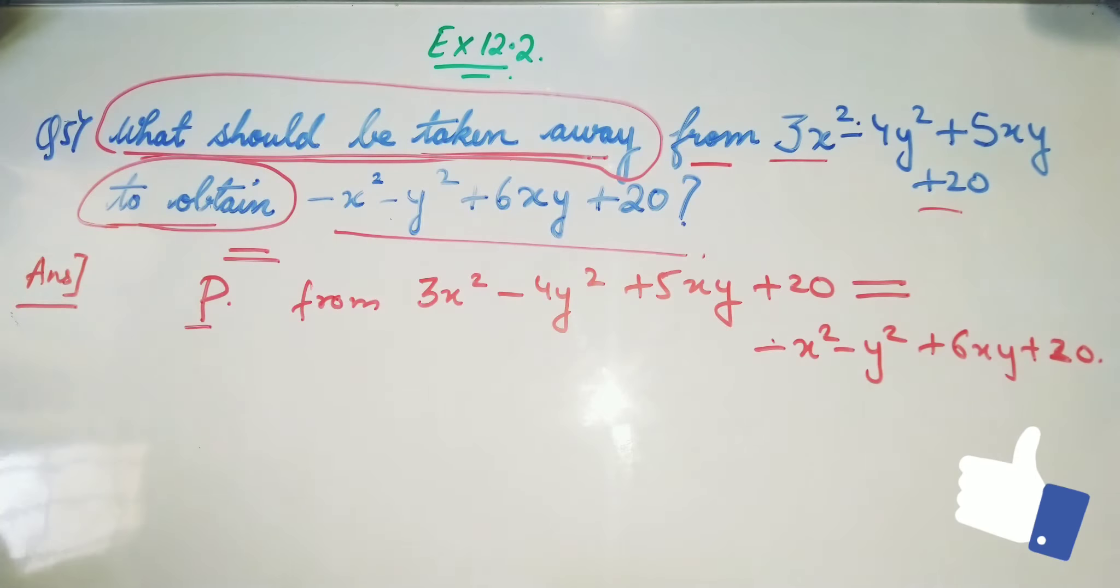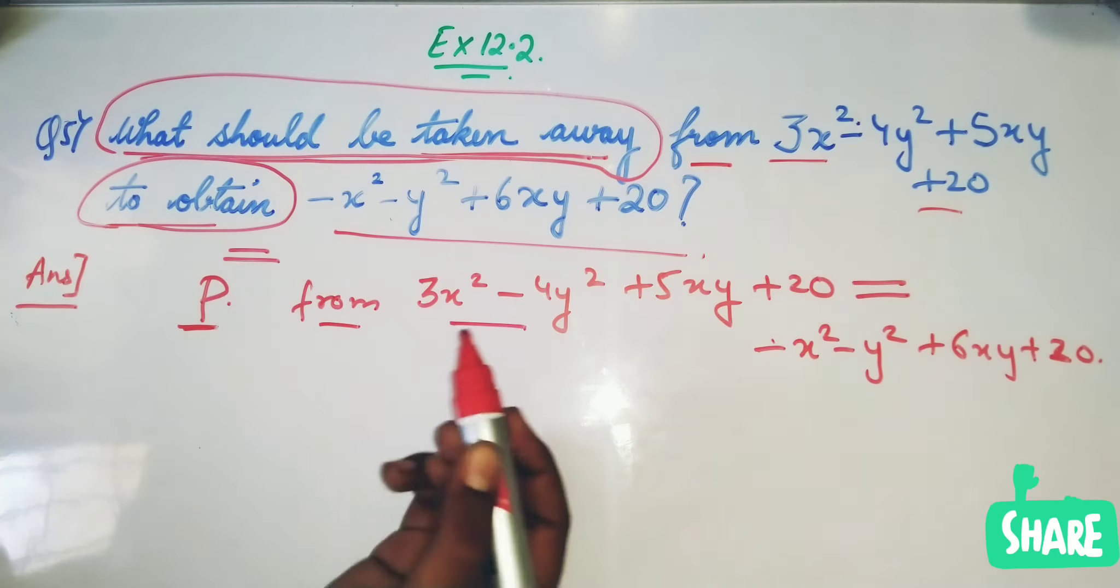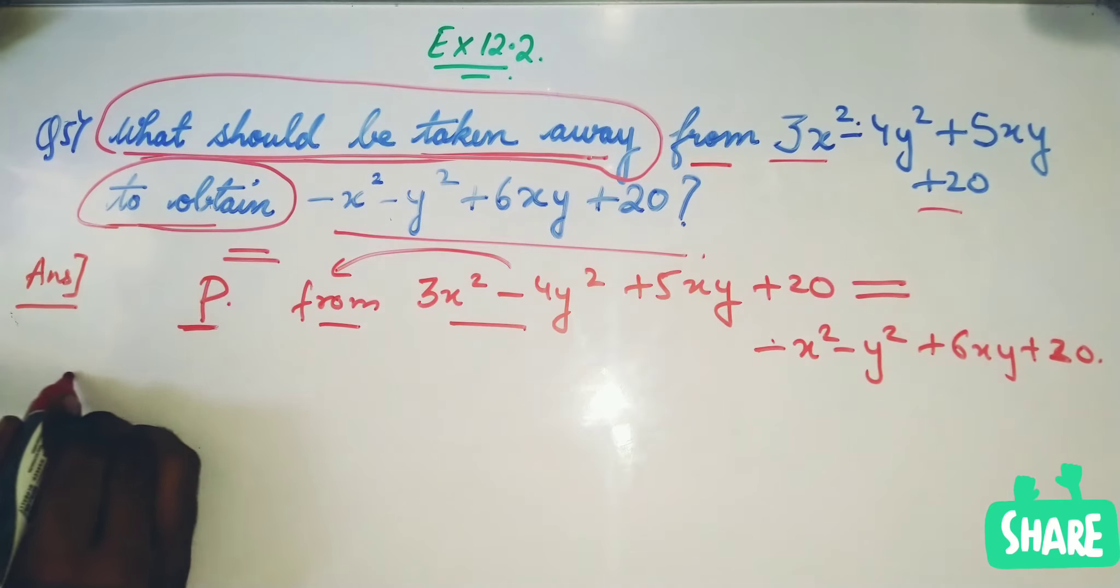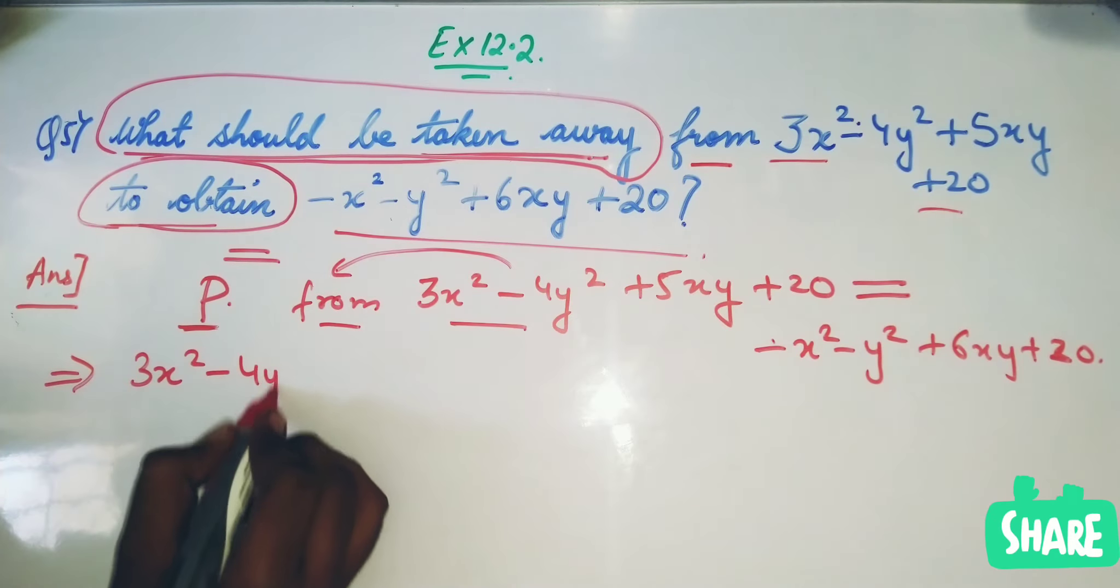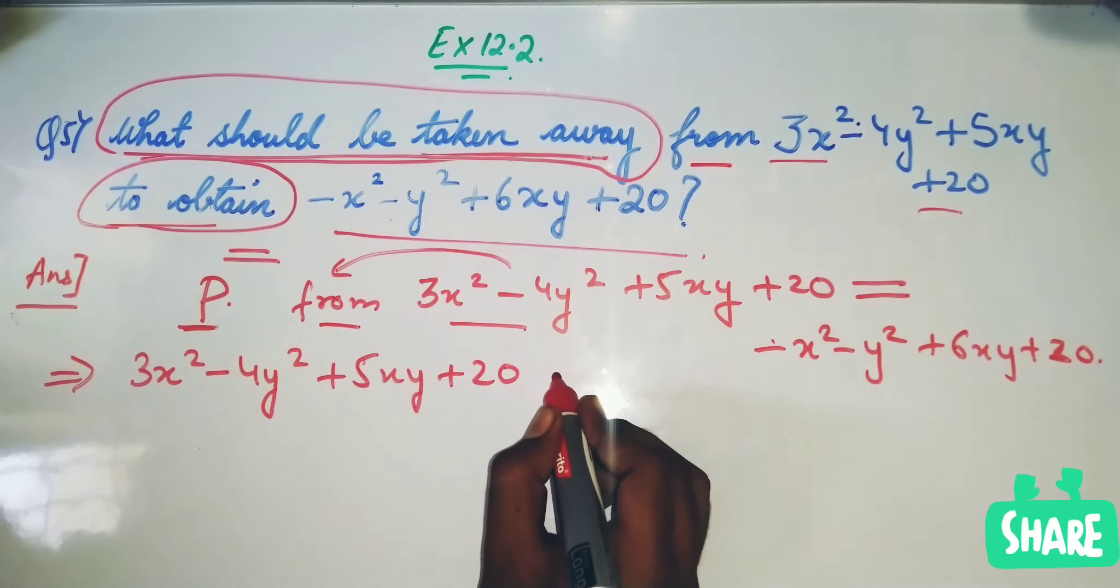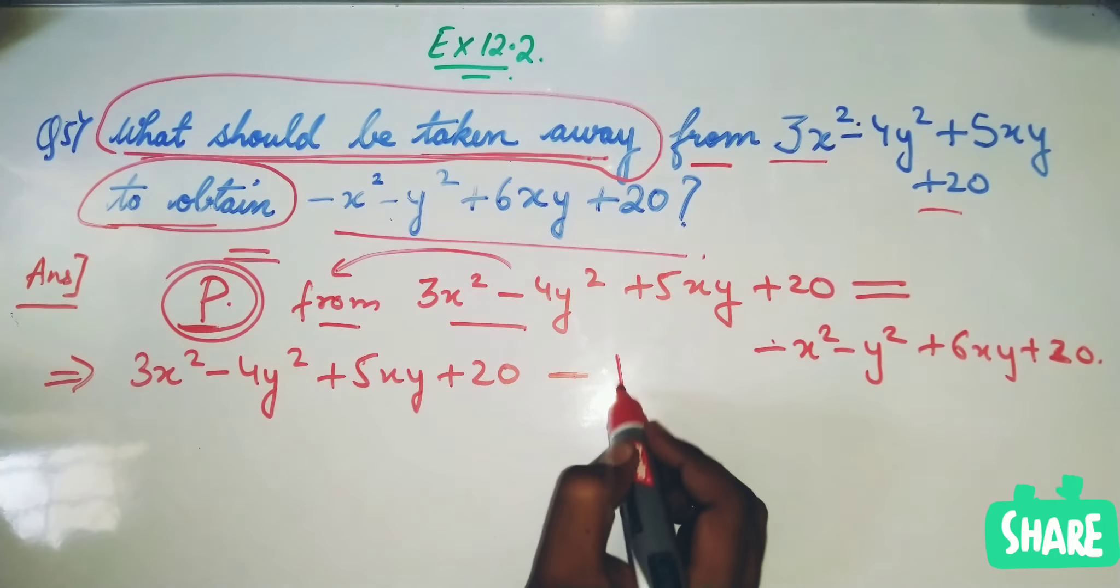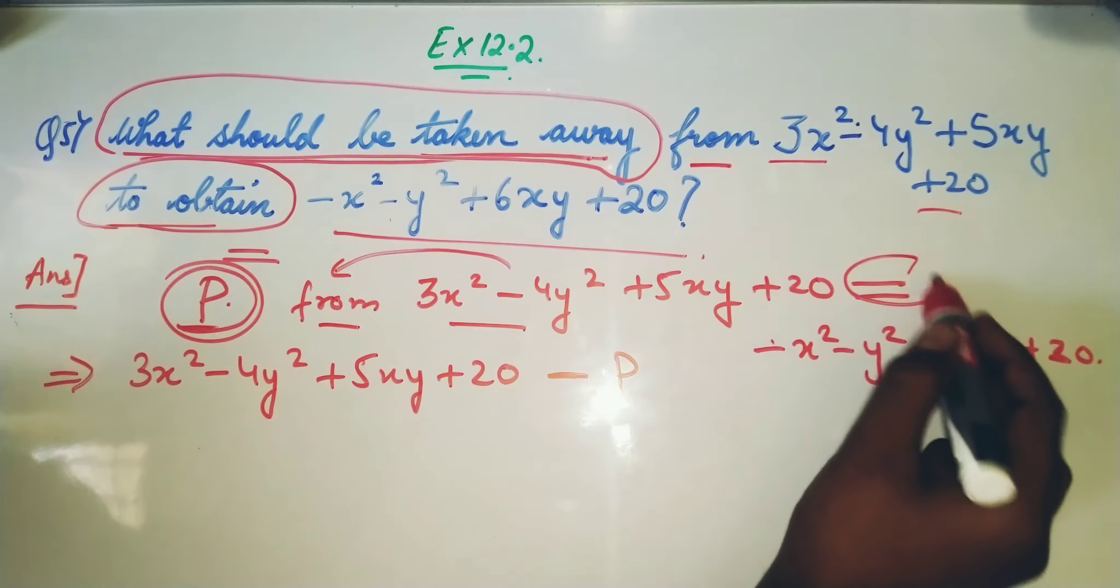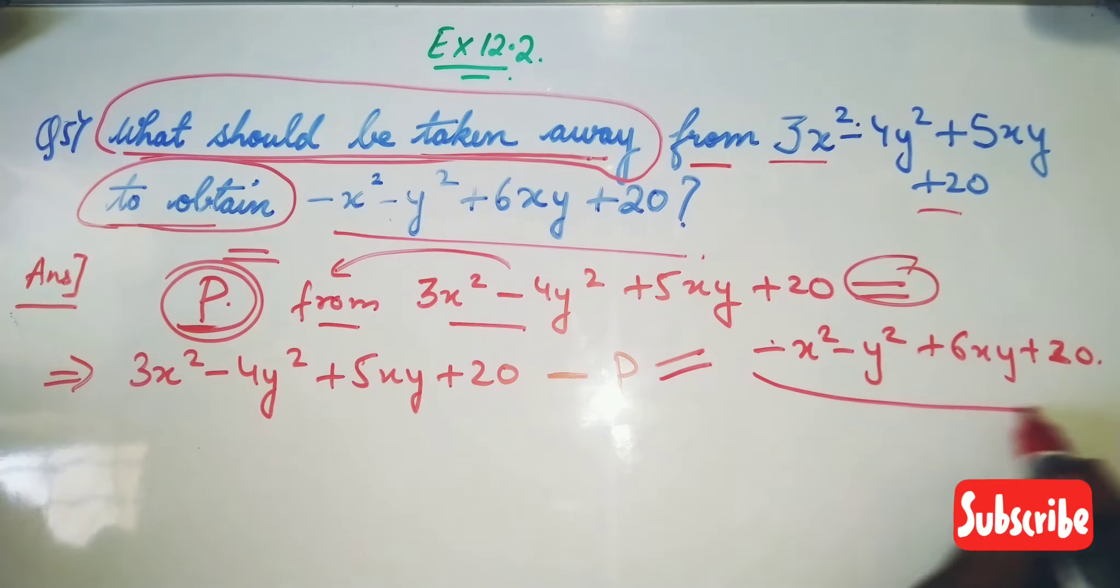Now what you have to do here is you have to rearrange this. Something you are taking away from, from means you have to write this first. That means you have to write 3x² - 4y² + 5xy + 20, and then you have to put minus sign, then what is the term here? That is P that you have to find out. Equal to what? Equal to this term.